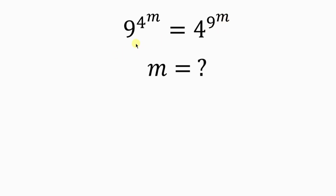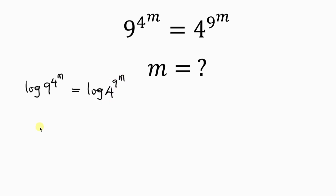Our first step will be to take the log of both sides. So I'll take the log of 9 to the 4 to the m, equal to the log of 4 to the 9 to the m. Now our next step will be to apply the property of logarithm that says the log of a to the p is the same as p log a.